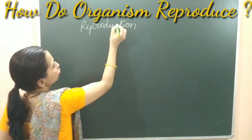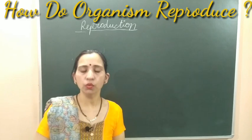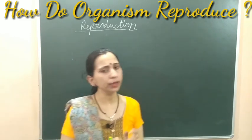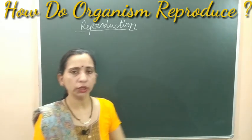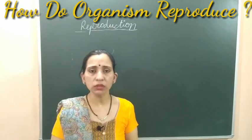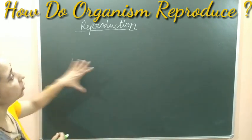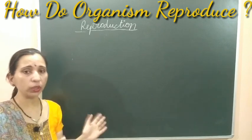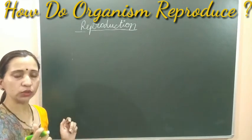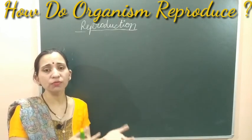If somebody asks you what is reproduction in normal language, you will say that reproduction is the process in which any living organism gives birth to their offspring or their next generation. This process is known as reproduction. The proper definition is: reproduction is the production or formation of new organisms from the existing ones of the same kind or species.